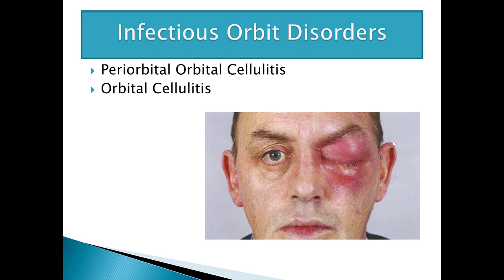A very similar condition that can look the same is periorbital cellulitis and orbital cellulitis. These are infections of the orbit region and not the nasolacrimal system, but you can see how the two conditions look similar in appearance if you're just doing an inspection.